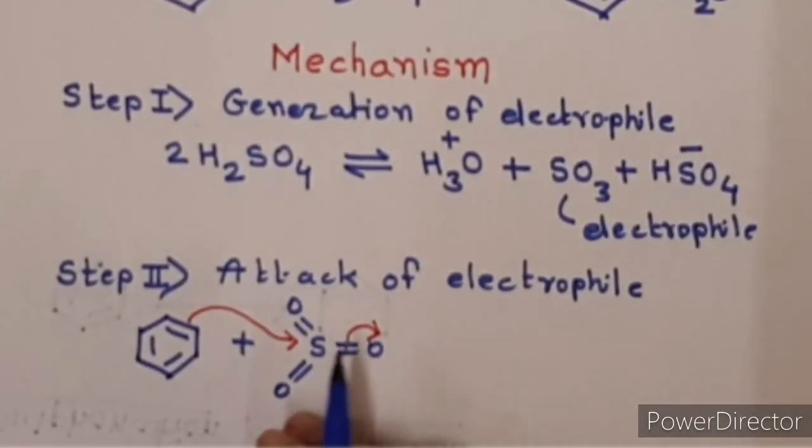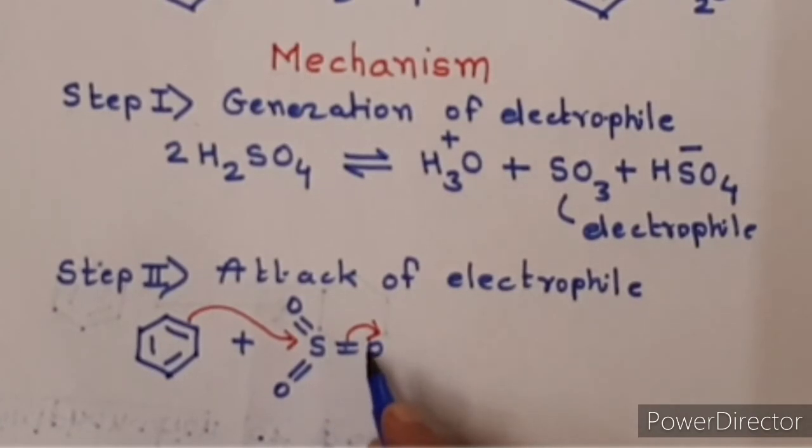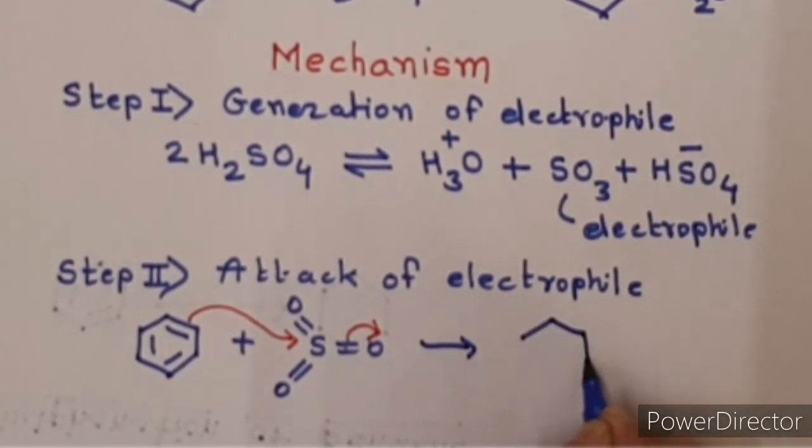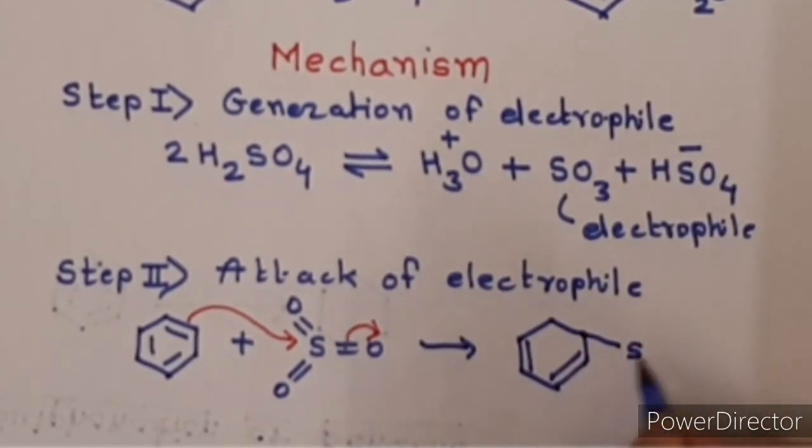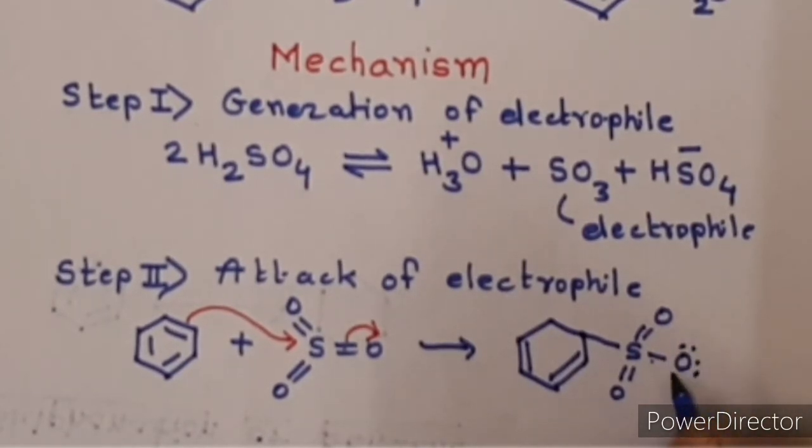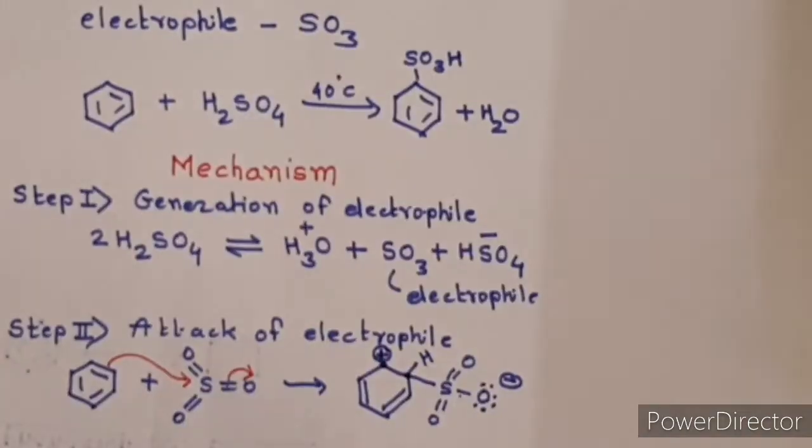In the second step, we show attack of the electrophile. I have shown here the structure of SO3, elaborate structure of SO3 and benzene. One of the pi bonds will attack sulfur, but at the same time, one of the double bonds between S and O will be converted to a single bond. This pi bond has been utilized for formation of sigma bond with S. Remaining two bonds are as it is, but one bond is converted to single bond. Now this oxygen will have negative charge. This carbon in benzene will have positive charge since pi electrons are lost.